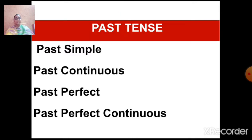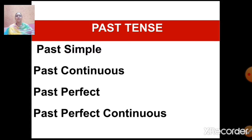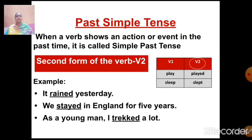Now let's start with past tense. We all know that past tense refers to actions that have already happened. Past tense is again divided into four subcategories: past simple, past continuous, past perfect, and past perfect continuous.